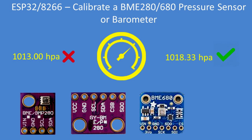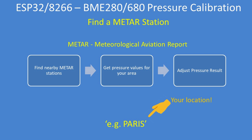If you use a Bosch pressure sensor, a BME280, you'll find that there's an offset depending on your altitude and pressure value from it. One of the best ways of getting a calibration value is to get the current air pressure in your area from a METAR station — that's a meteorological aviation report.